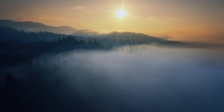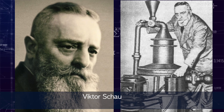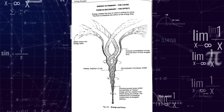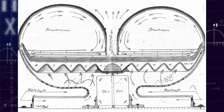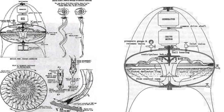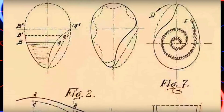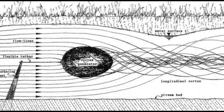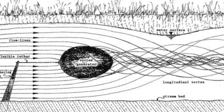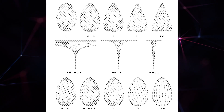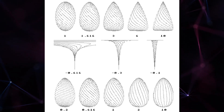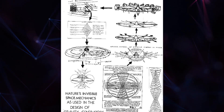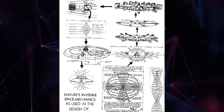Looking at Viktor Schauberger's work, who designed particularly in biomimicry and nature-inspired systems like his golden egg device, this is closely tied to the principles embodied by the golden ratio. The golden egg refers to his idea that the ovoid shape exemplified by an egg spontaneously generates vortex motion through its natural design — principles that promote efficiency and life.